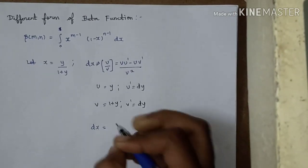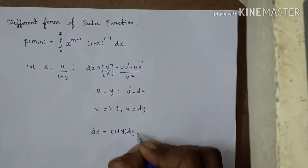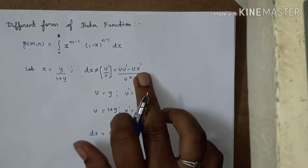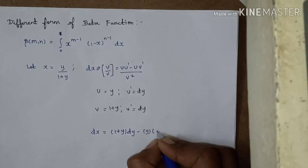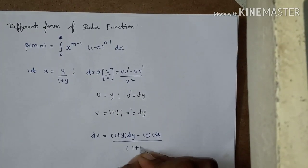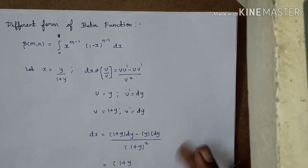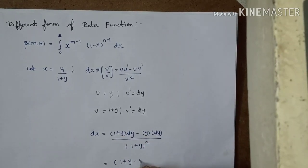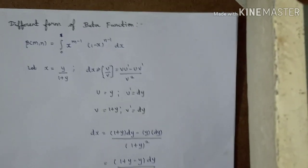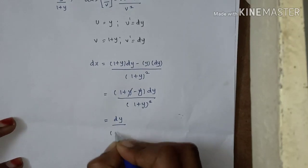So dx equals v times u-dash minus u times v-dash, divided by v squared. With v equal to 1 plus y, this becomes: 1 plus y times dy minus y times dy, divided by 1 plus y whole square. Simplifying: 1 plus y minus y cancel, giving dy divided by 1 plus y whole square.